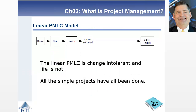One approach is the linear PMLC model. You go through each process — scope, plan, launch, monitor and control, and close — only once. You scope it once, plan it once, launch it, monitor it once, and close it. It is change intolerant. Linear approaches are really appropriate only when the plan is not going to change, the requirements are not going to change, and you can address the issue by going through each phase only once.